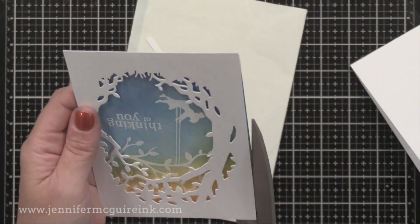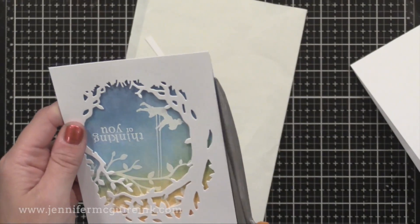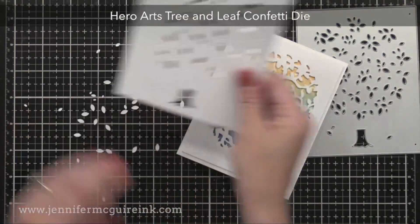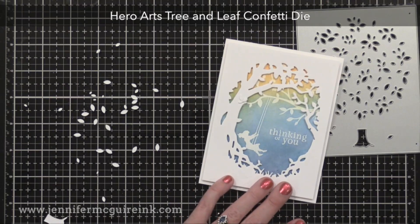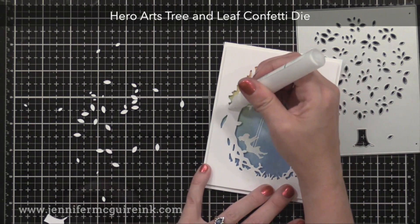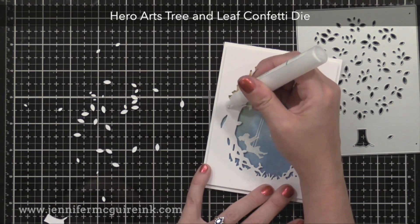I added a die cut frame to this one also, trimming off anything that's peeking out of the edge there. And I'll add that to a 4 1⁄4 by 5 1⁄2 inch card. I really like that tree frame die included in the kit.